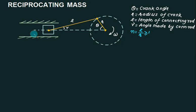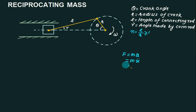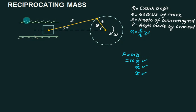In today's lecture we want to find out what are the forces involved on the reciprocating mass. Force is given by mass into acceleration, which we can write as M into X double dot. To find out acceleration we must first know velocity, and to find out velocity we must first know the displacement. So first I will develop the equation for displacement, then go for velocity, then acceleration.